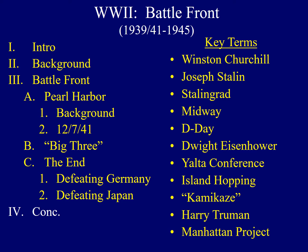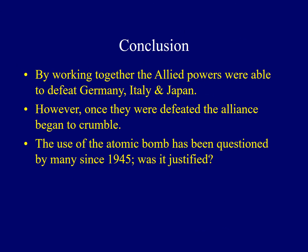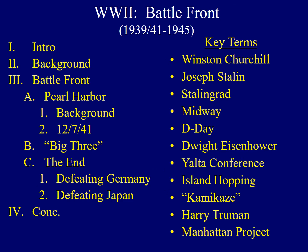Now that we've studied some of the important concepts associated with World War II, we can review the main ideas discussed today. World War II was the most devastating war in world history, and by working together, the Allied powers were able to defeat Germany, Italy, and Japan. However, once that victory was complete and their common enemy defeated, the alliance began to crumble, particularly as tension developed between the Americans and the Soviet Union. The use of the atomic bomb by the United States has been questioned by many since 1945 — was it justified? The next slides will show sources used and hyperlinks for more information, including documents relating to the American use of the atomic bomb in World War II.